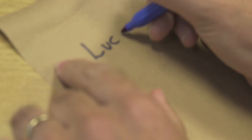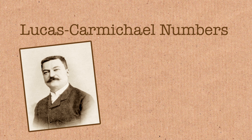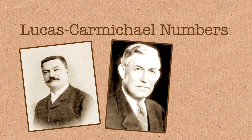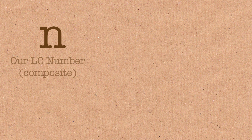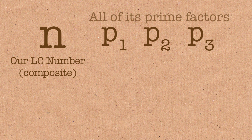These are called Lucas Carmichael numbers, named after two very famous mathematicians, Edward Lucas and Robert Daniel Carmichael. So if you have a composite number, which we'll call n, it's got some prime factors — a composite integer.